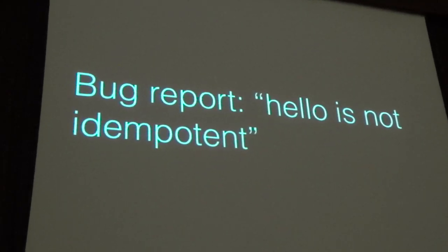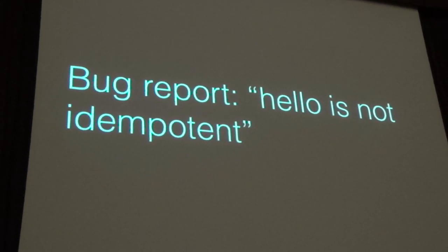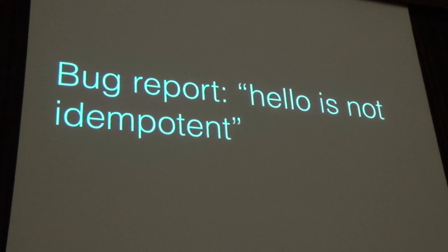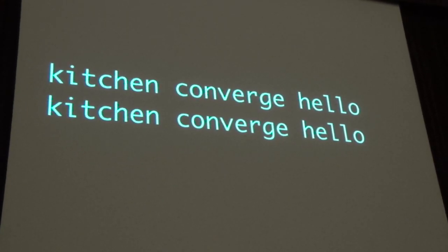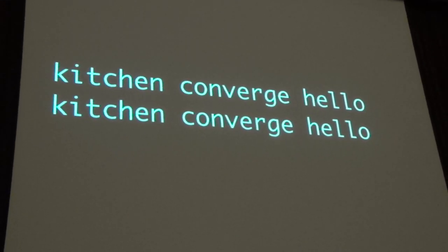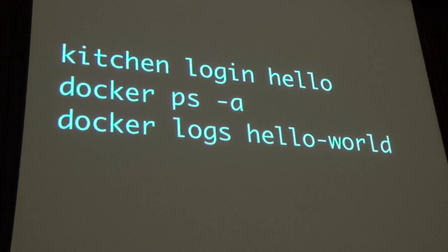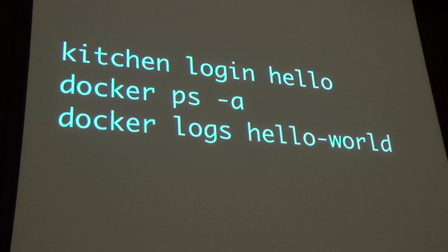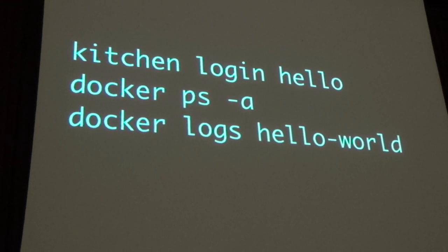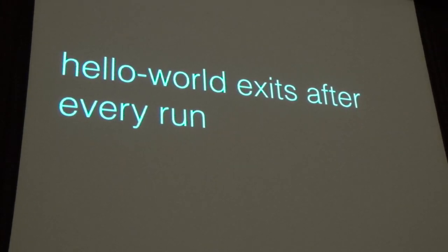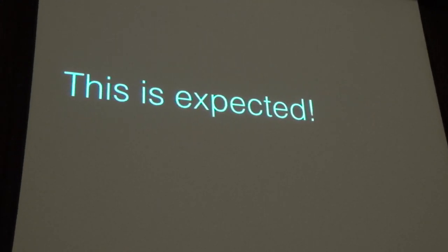As you're doing the software you'll end up having to maintain it and patch it. You get a bug report saying hello-world is not idempotent. To handle bug reports, reproduce the error and repair it. You go back to your software, converge the machine with Test Kitchen twice, and sure enough every time Chef runs it is firing this resource. You expect it to do the thing the first time and do nothing on subsequent runs — but that's not the case. You log in, look at the logs, and turns out hello-world exits after every run.